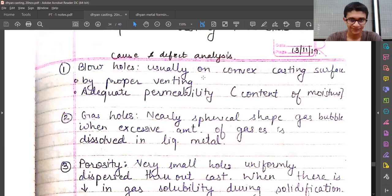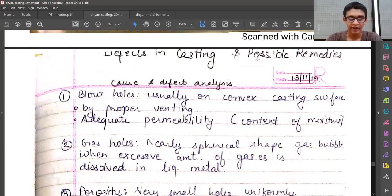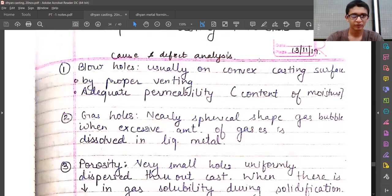Then come back to understand what are the possible defects which can occur during a casting process and what are the possible remedies. Initially we'll be going through very simple defects, so just names would be enough for you to understand.